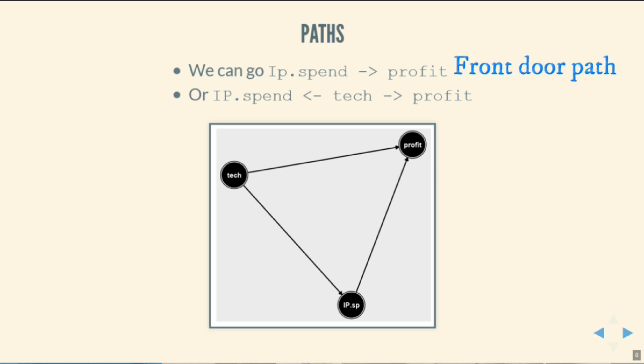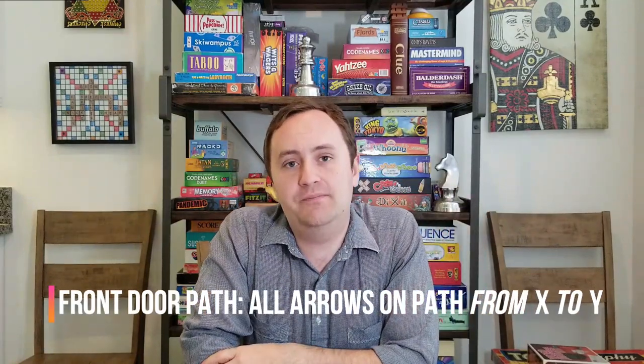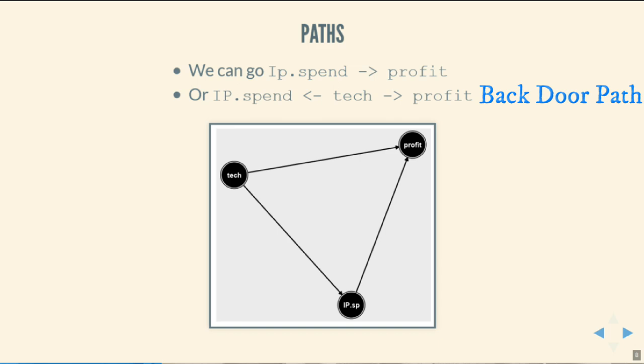This suggests there might be what we are going to call a back door. There are two ways to walk the path from IP spending to profit. We could either go directly from IP spending to profit — that's the front door, the part we're interested in. It's a path where we start at IP spending and follow arrows that only point away from it. We also have a back door: the path from IP spend to tech and then back to profit. That path contains an arrow pointing towards IP spend, which makes it a back door.